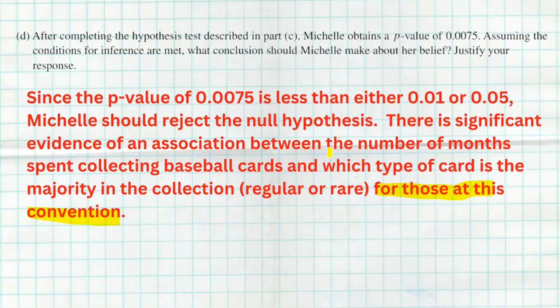That's it for question number five. Overall, it really wasn't too bad. The two probability questions in parts A and B were pretty straightforward. Part C just wanted you to identify the chi-squared test for independence and state the hypotheses — you didn't have to perform the test. And in part D, they gave you the p-value, so you just needed to know what a low p-value means and how to interpret it with a proper conclusion. I really hope you nailed it and got a good score, and I hope everybody did well on the AP test this year.